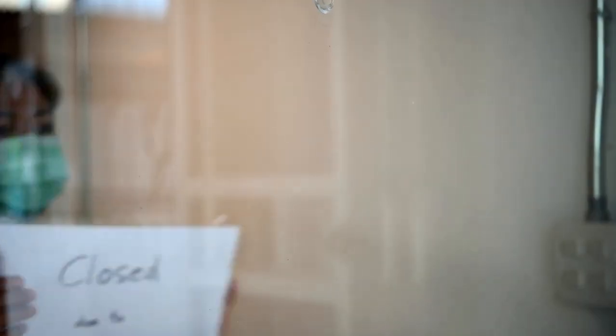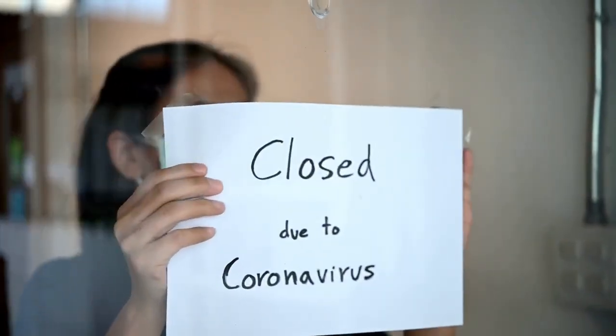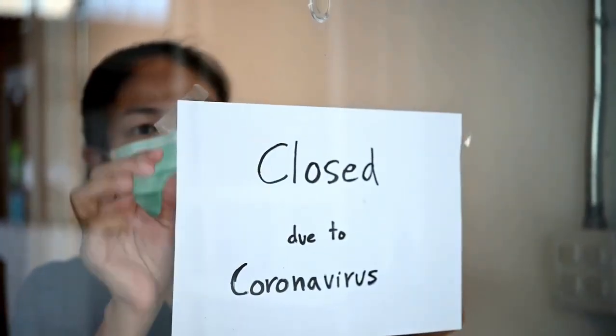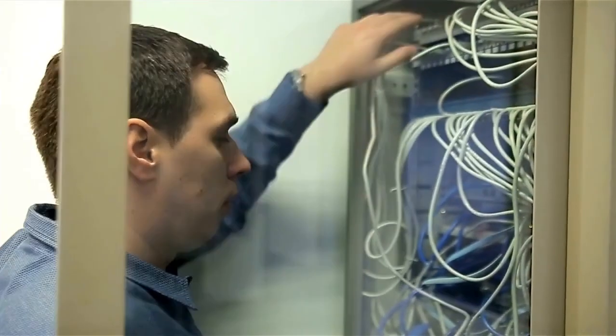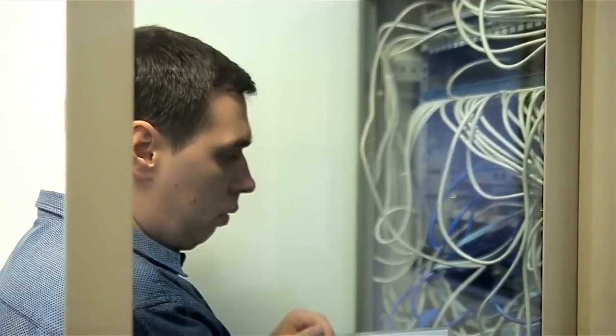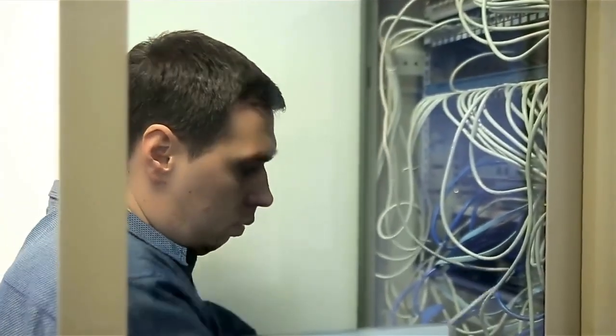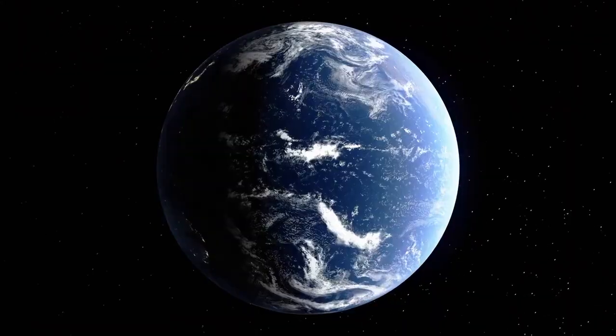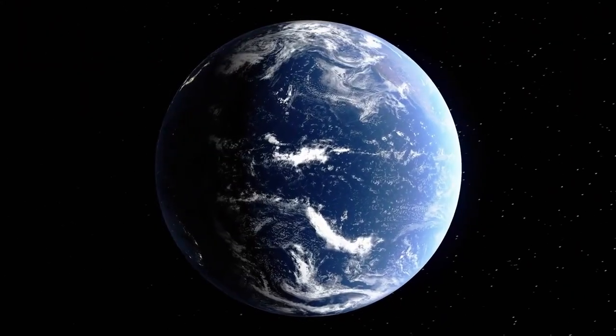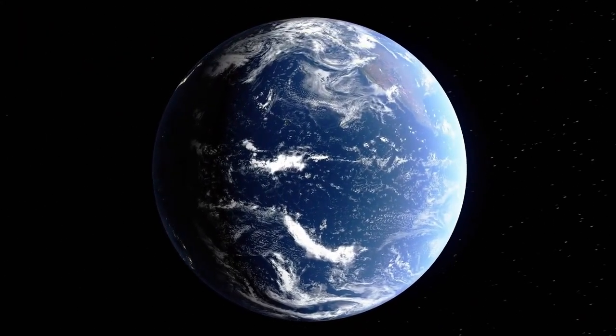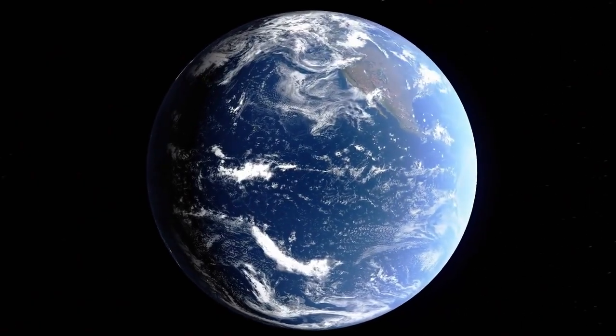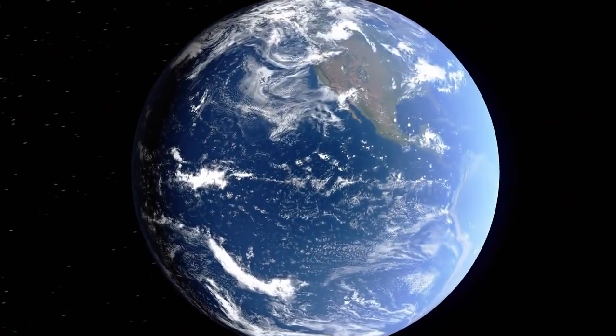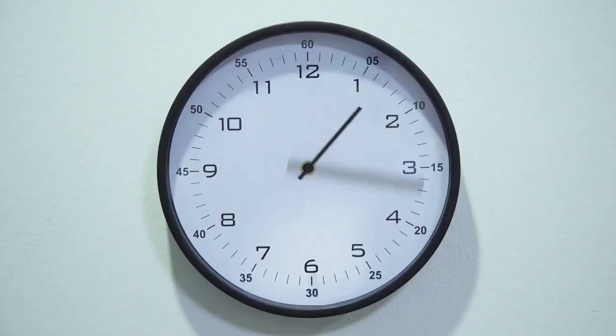However, another challenge arose: communication delays. Given that Voyager 1 is currently 14.5 billion miles from Earth, radio signals take about 22 hours to travel one way. This means that mission control must wait nearly a full day for a response to any command. To minimize errors, engineers carefully review instructions before sending them to Voyager 1. Although frustrating, these delays are a natural consequence of deep space exploration.